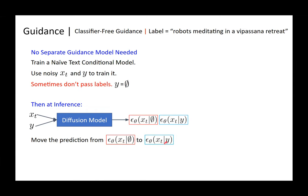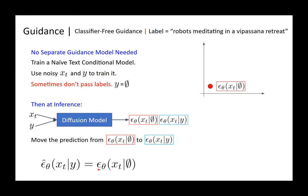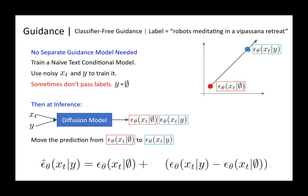What you do is try to move your prediction — the mean of your distribution — from the distribution without text toward the distribution with text. Graphically, the red dot is the mean without text and the blue dot is the mean with text. You subtract the red mean from the blue mean to get a vector, then multiply that vector by a scale factor s.